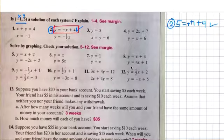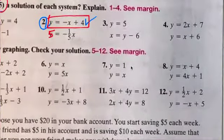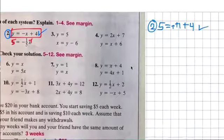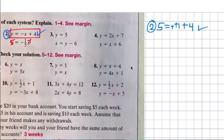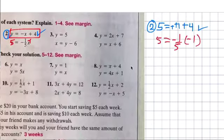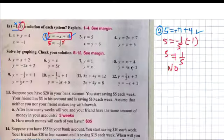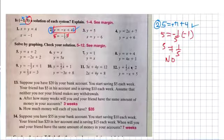Now for the second one though, it doesn't work. It says y, put five here for y and negative one here for x. Is five equal to negative one over five times negative one? No, because five does not equal to one over five. So no, it doesn't satisfy the system. It only works for one, doesn't work for the other.